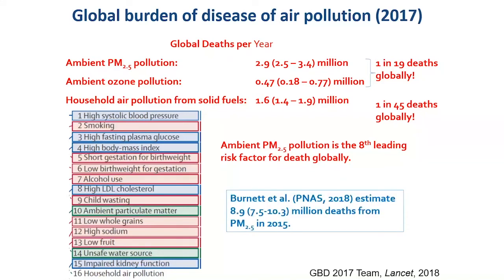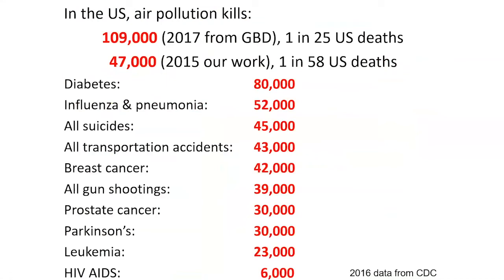Just to put this into perspective, there's been new research revising the functions used for PM2.5-related mortality. Using those new revised functions, they estimate nearly nine million deaths per year from particulate matter. We really think this is the most important environmental risk factor for health. Focusing on the United States, the GBD estimates about 110,000 deaths per year — one of every 25 deaths. Air pollution is more important for health than all transportation accidents and all gun shootings combined, or more important than breast cancer plus prostate cancer.